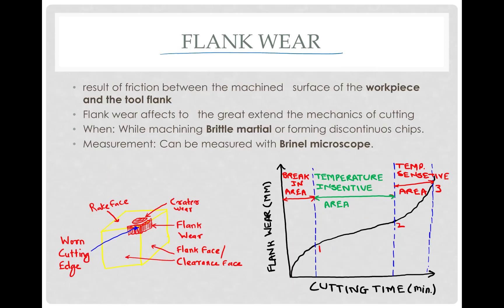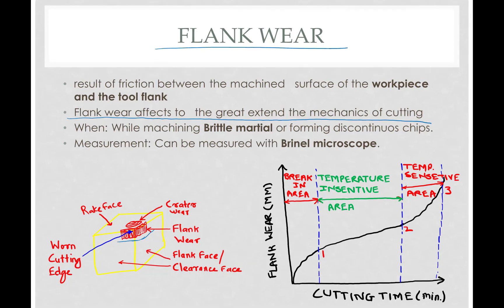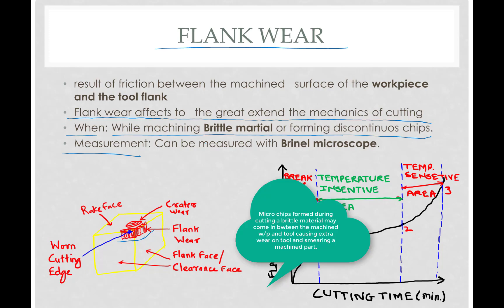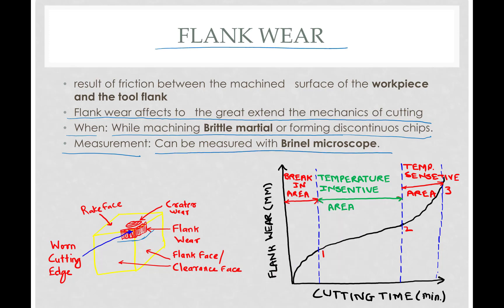The next one is flank wear. Flank wear occurs on the flank due to the rubbing action between the machined workpiece and the tool, and it affects the mechanics of cutting to a great extent. It occurs mainly while machining brittle materials or when forming discontinuous chips. Flank wear can be measured accurately with a Brinell microscope.